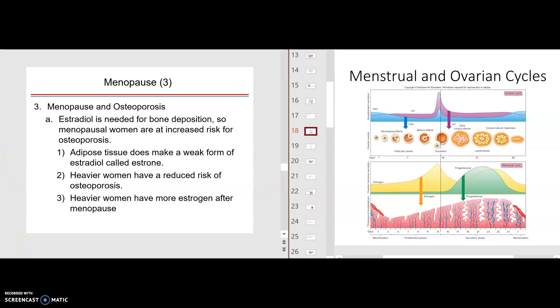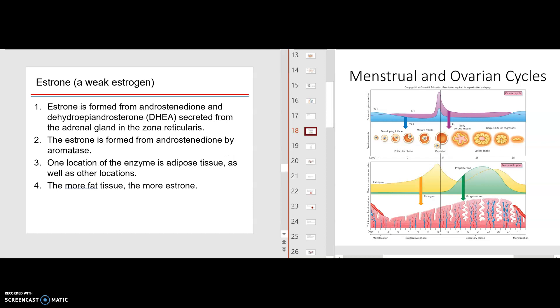All right, class. So estrone is weak estrogen. It's formed from androstenedione and dehydroepiandrosterone secreted by the adrenal gland in the zona reticularis. The zona reticularis is the innermost layer of the adrenal cortex. The estrone is formed from androstenedione by aromatase. And one location then is adipose tissue as well as other locations. The more fat tissue, the more estrone. So a heavier woman will have a little more estrogen even though it's a weaker estrogen.